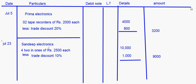These are the only two transactions for the purchase returns book. Now we total this: 9000 plus 3200 comes to 12,200 rupees. That is all you have to do in the purchase returns book.